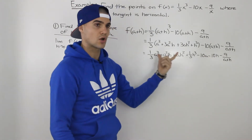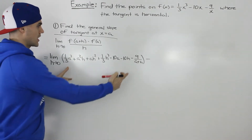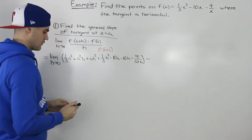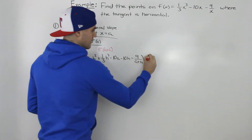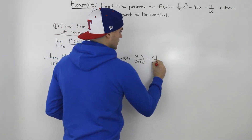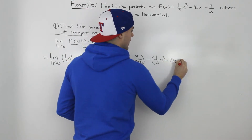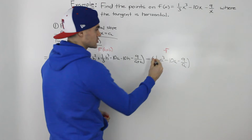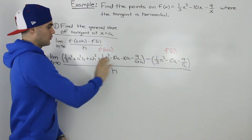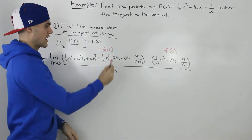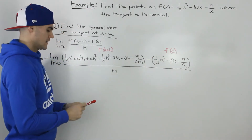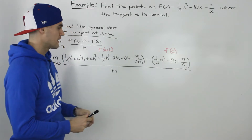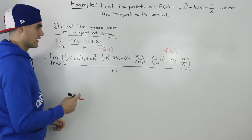That whole expression represents f(a+h) in the difference quotient formula. Then we subtract f(a), which is just (1/3)a³ minus 10a minus 9 over a — make sure to put it in brackets because you're subtracting that whole expression. All of that is still over h. When we distribute the negative inside that bracket, we get minus (1/3)a³ plus 10a plus 9 over a.